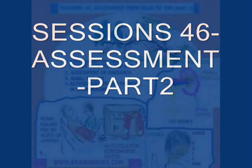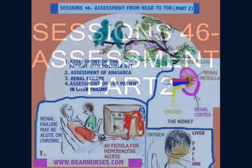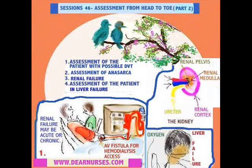Hi guys, we're back with session 46, which still works on assessment from head to toe, part 2. You'll still be able to find more helpful information at DNAssist.com. The topics for discussion are assessment of the patient with possible DVT, which is deep vein thrombosis, assessment of anasarca, renal failure, and assessment of the patient in liver failure. So let's get started.